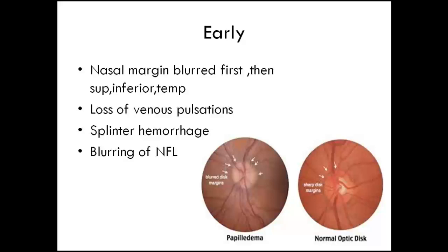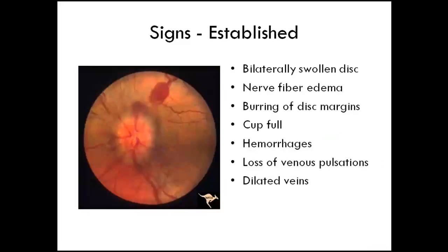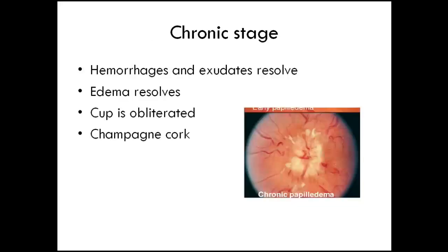In early papilledema, you see a well-defined normal optic disc giving way to slight blurring of the superior and temporal disc margins. There is loss of venous pulsations — though this is not a very pathognomonic sign, as 10–15% of normal patients may also lack venous pulsation. There could be splinter hemorrhages and blurring of the nerve fiber layers. Dilated veins are also seen in established papilledema.